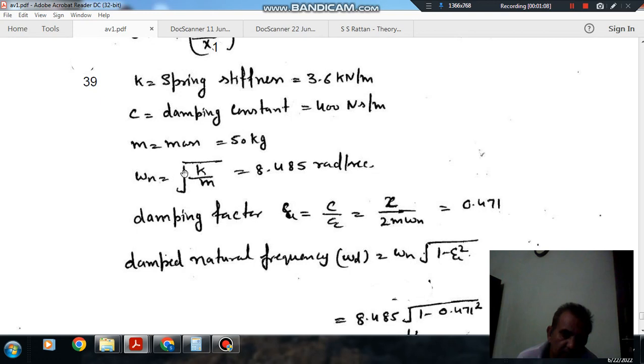Omega_n equals root k/m. K is 3600 N/m and m is 50 kg, so omega_n comes out as 8.485 rad/sec.